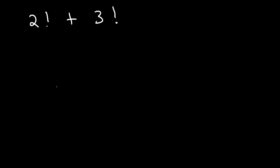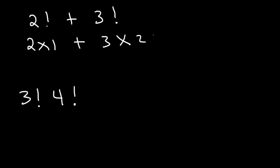Now what about 2 factorial plus 3 factorial? Go ahead and evaluate that, and also evaluate 3 factorial multiplied by 4 factorial. Now 2 factorial is simply 2 times 1. 3 factorial is 3 times 2 times 1. 2 times 1 is 2. 3 times 2 times 1 is 6. 2 plus 6 is 8. And that's it for that.